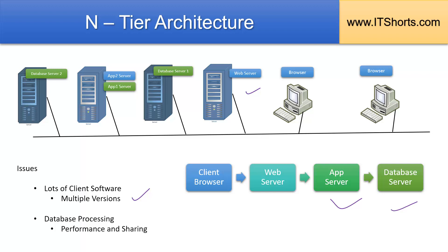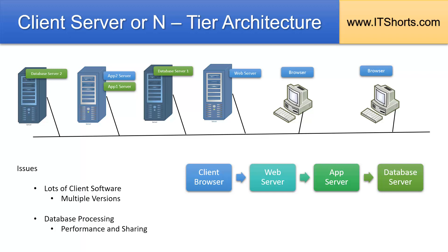The application server then contacts the database server for its data, and that's how processing happens. Currently, it's common to see multiple web servers connecting to multiple application servers and multiple database servers. There could be many tiers between a request originating from a client's browser and the answer it receives. That's the reason this type of architecture is called N-tier architecture, where N is any number as designed by the IT architecture team. But fundamentally, everything is a client-server architecture — each tier interacts with one another as both a server and a client, meaning they provide information and get information.